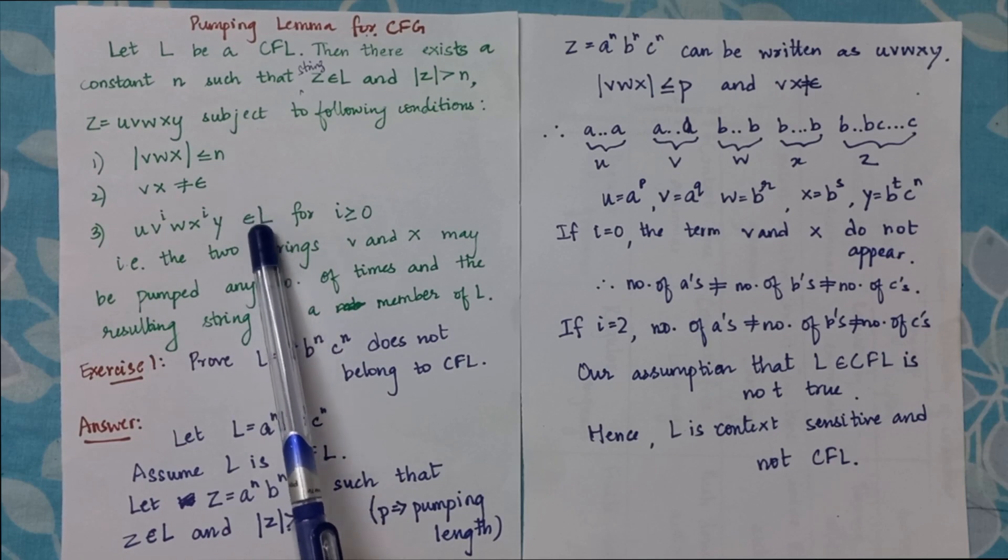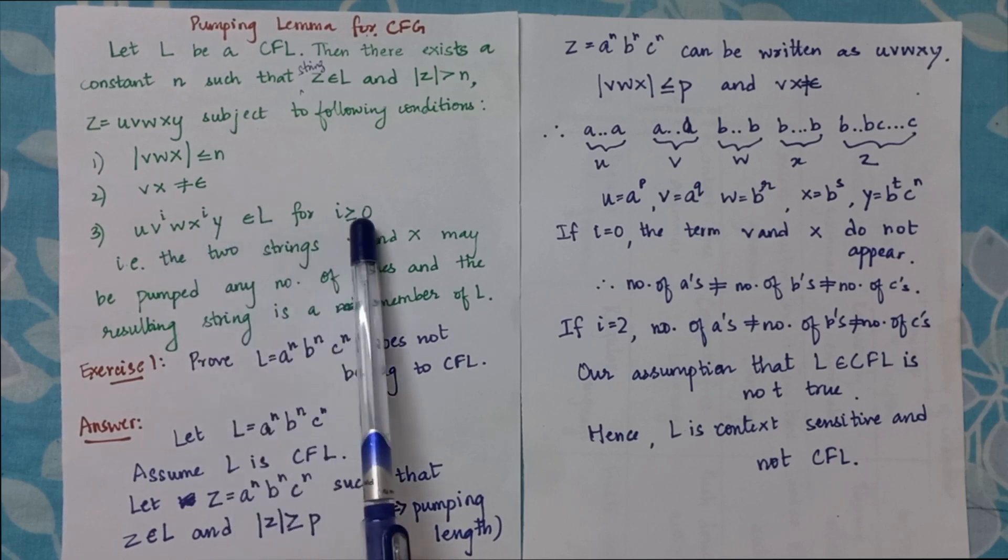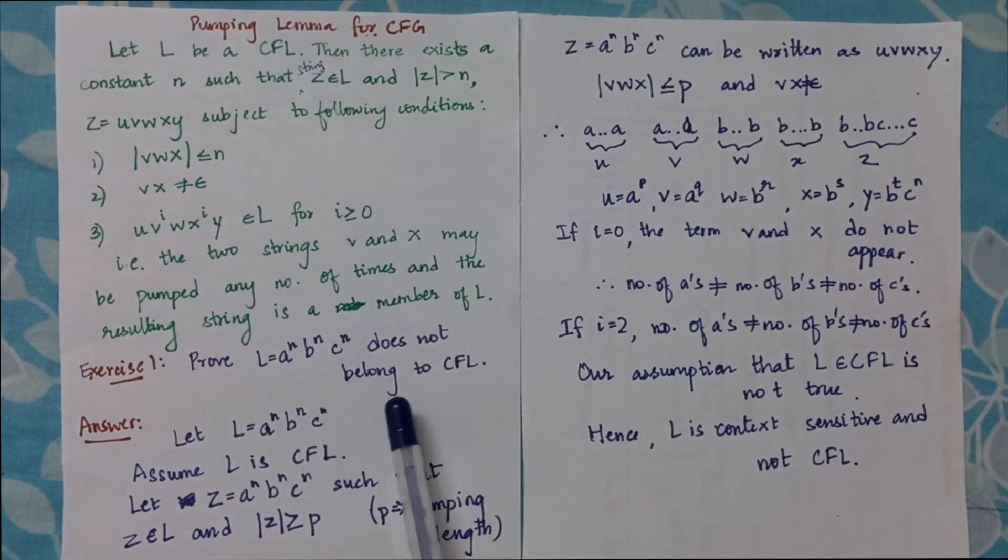So let us consider an example to prove that L equals a^n b^n c^n does not belong to CFL.